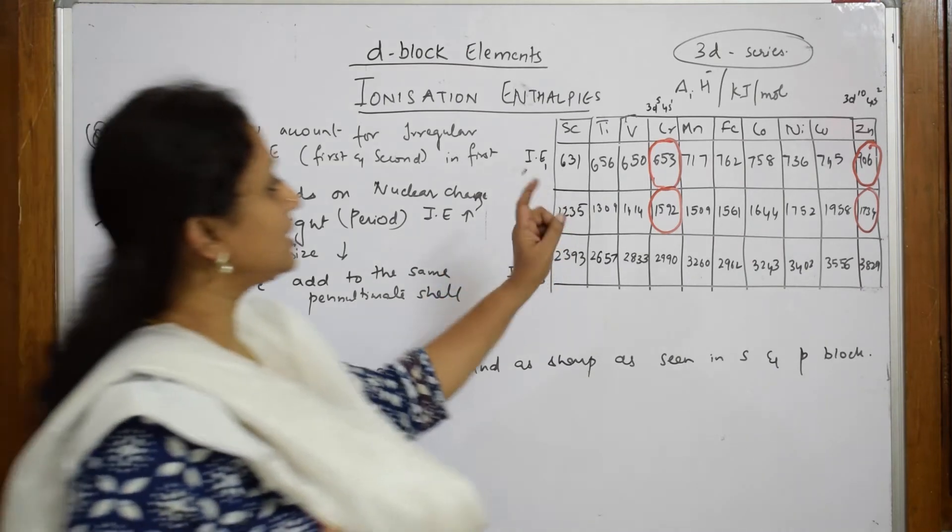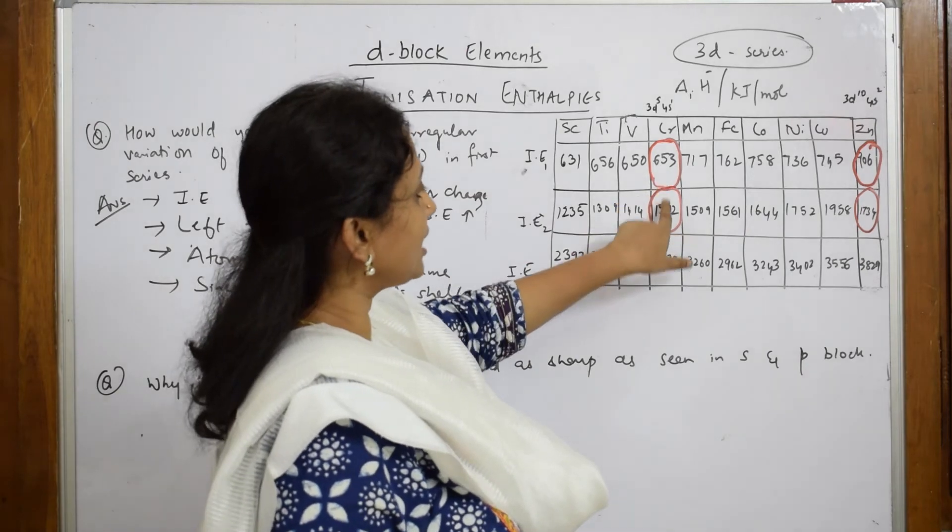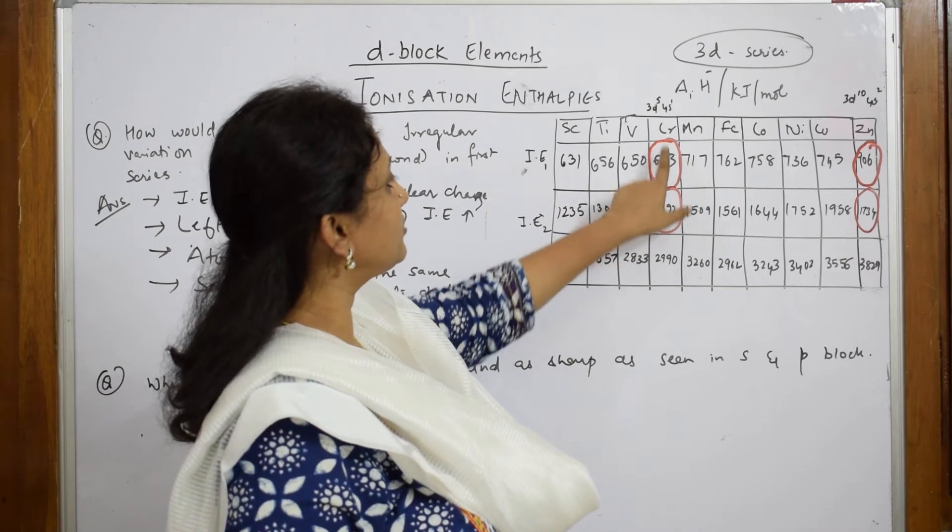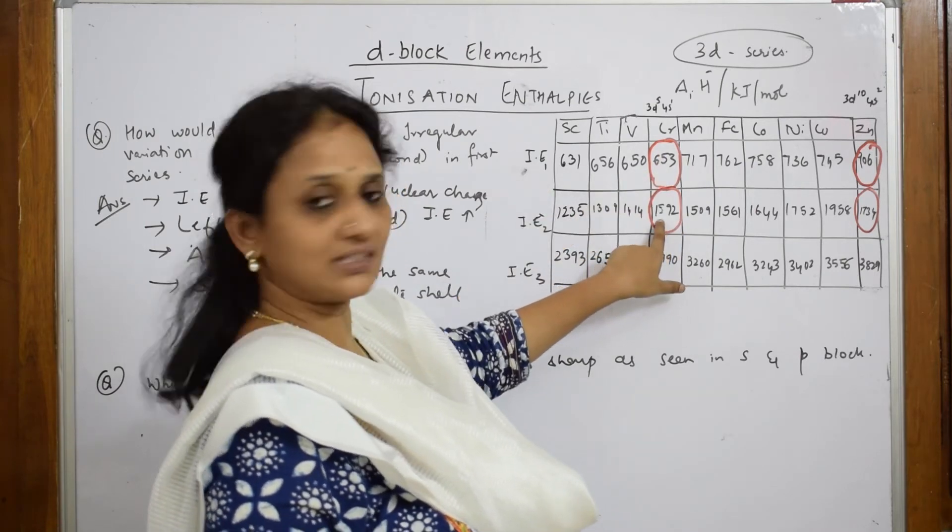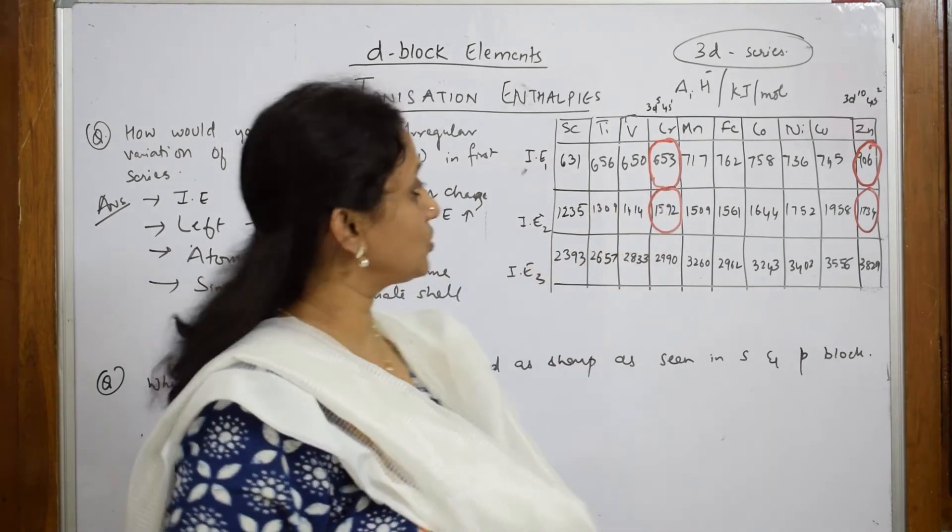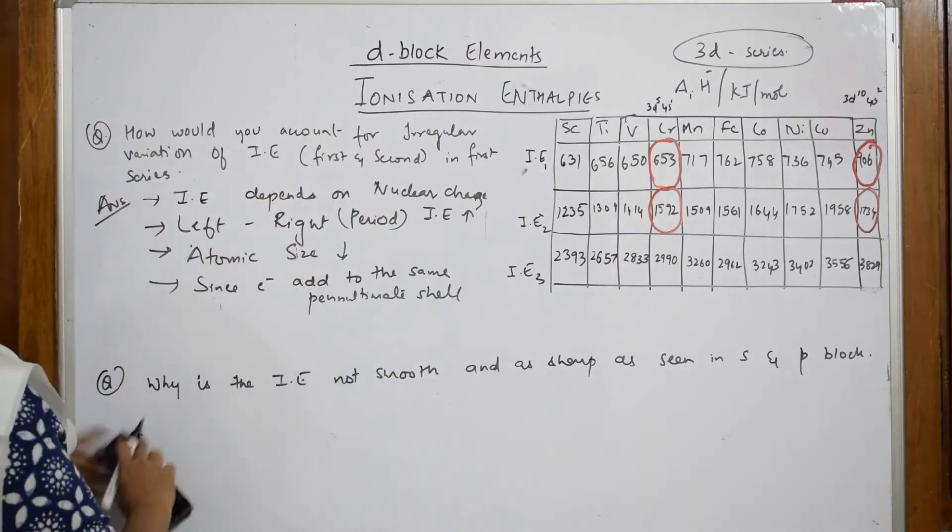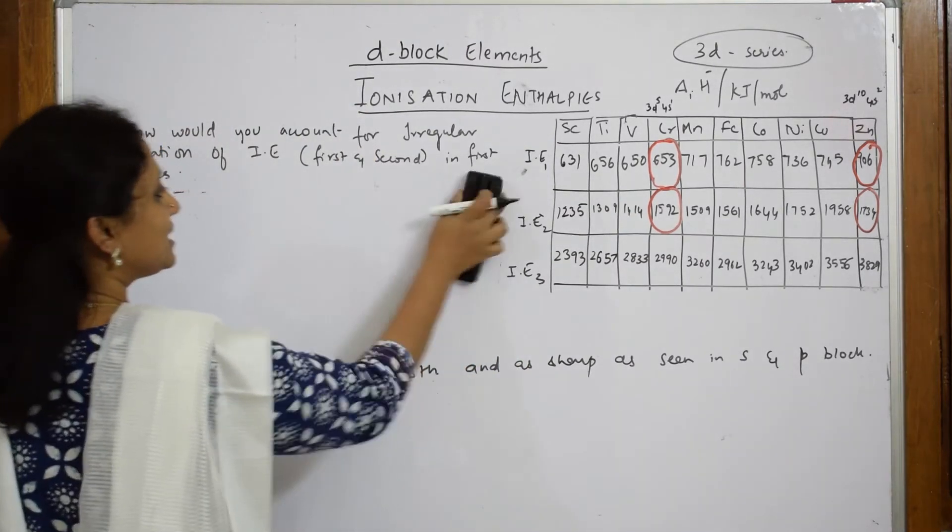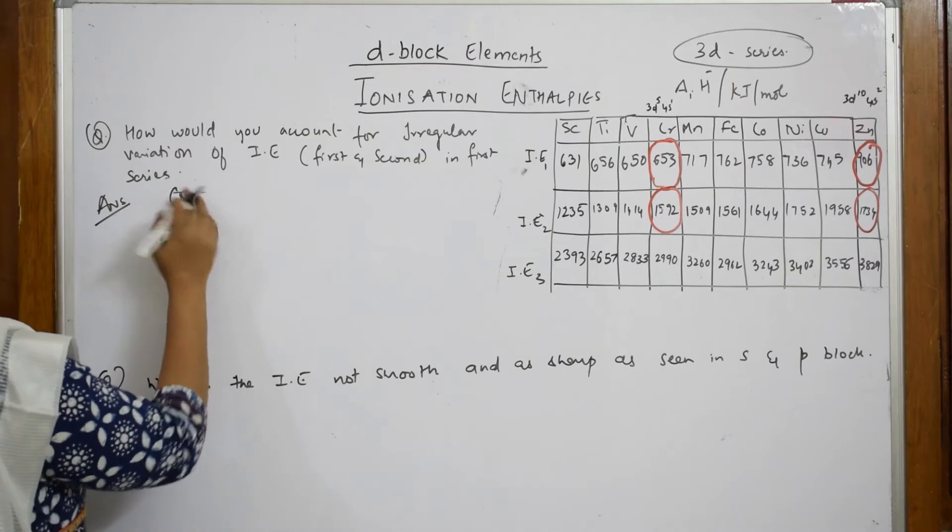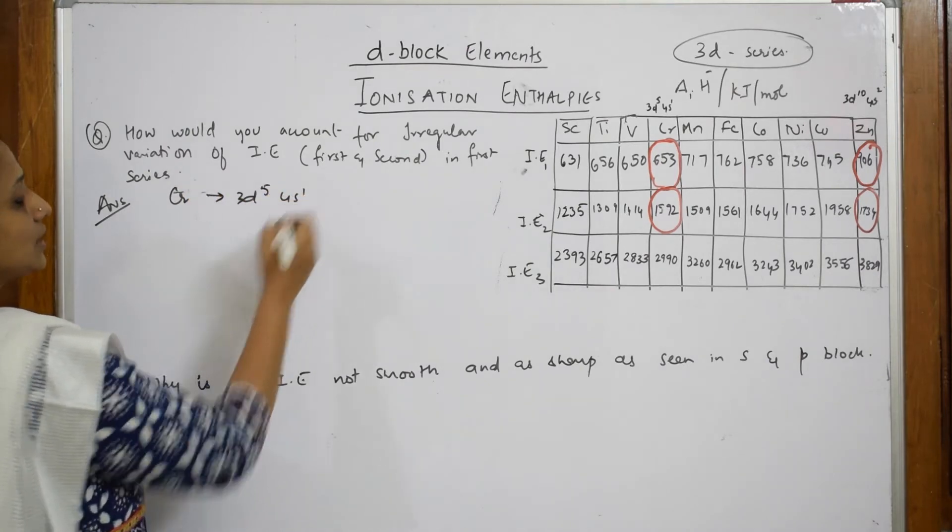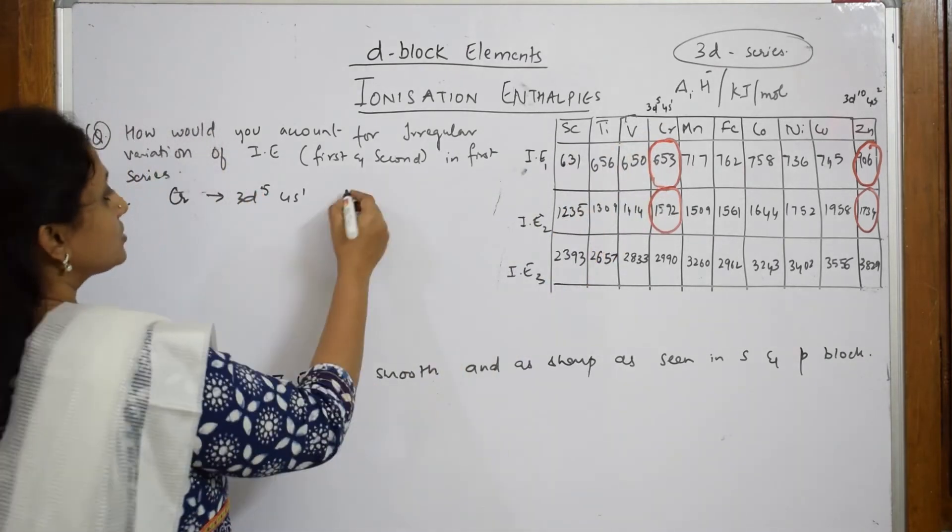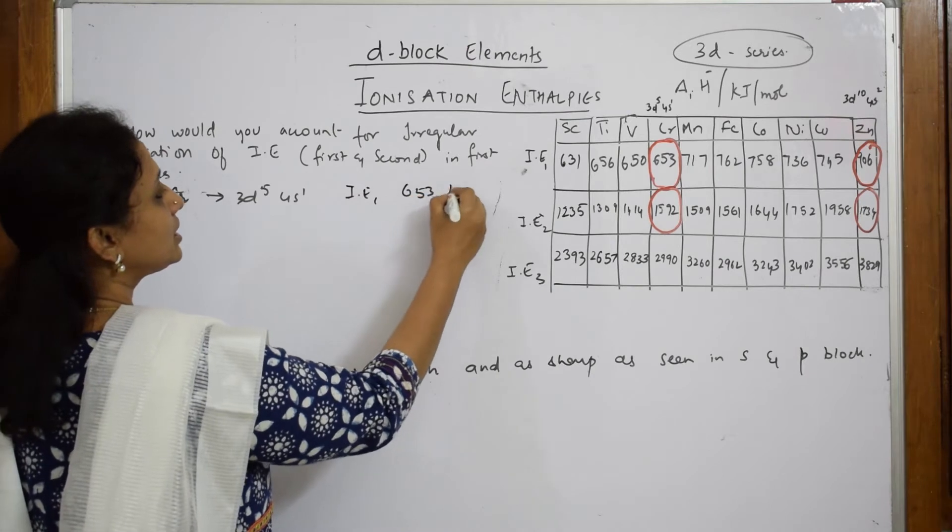Now, after writing that, now start with the table. I have marked the anomaly with red. In chromium, first ionization enthalpy and chromium second ionization enthalpy. Observe carefully. Chromium, basically, first ionization enthalpy is already high. After you finish this basic thing, let us start with chromium. When I take out chromium, the configuration of chromium is 3d5, 4s1. The first ionization enthalpy is 653 kilojoules per mole.